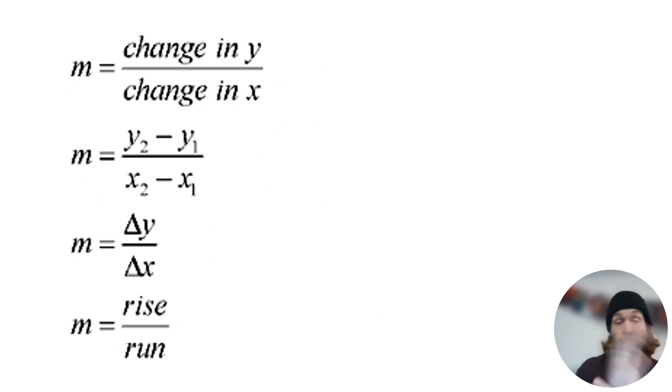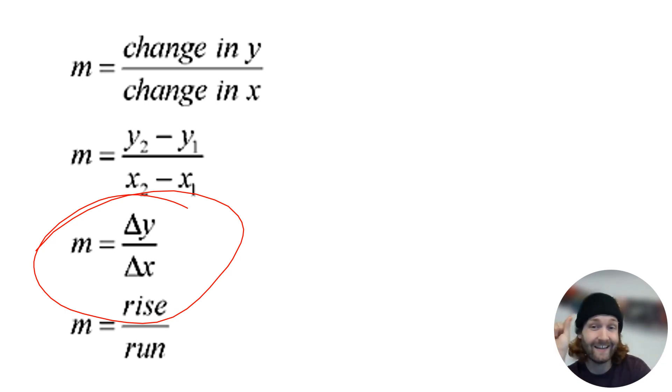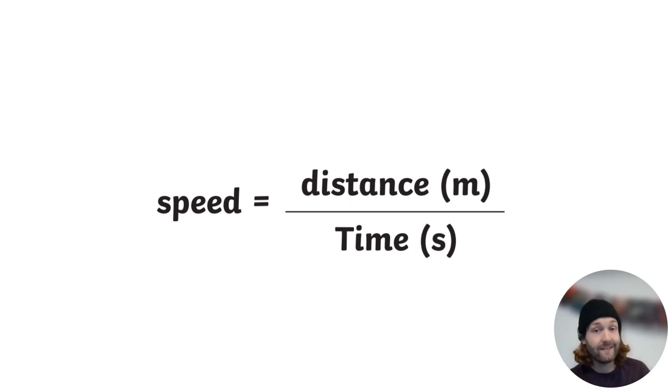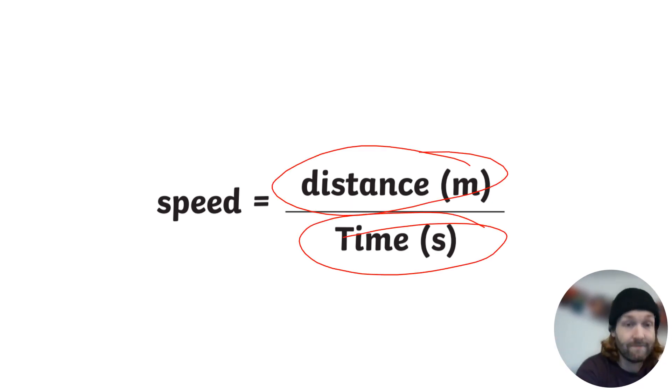I think about what a gradient is. A gradient is the change in y over change in x. So I write this down, m equals change in y over change in x. Then I simply substitute the y and the x in. In this case, the y was distance. In this case, the x was time, when you look at the axes of the graph. So what's that give me? That gives me a gradient of speed, because the change in y is the change in distance, the change in x is the change in time. So that means m, the gradient, is speed.